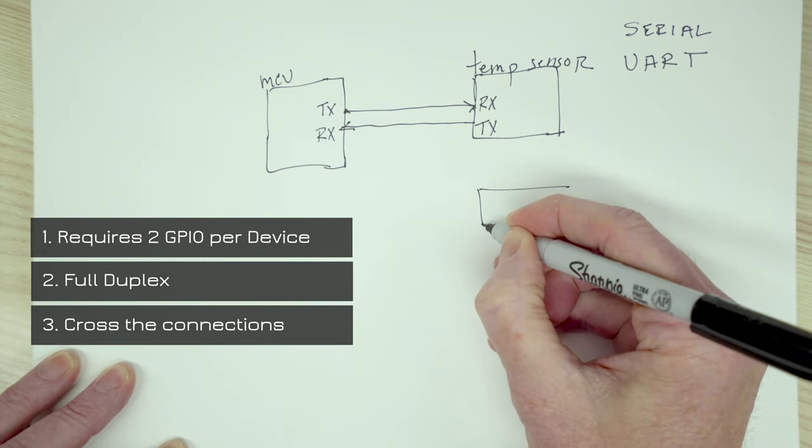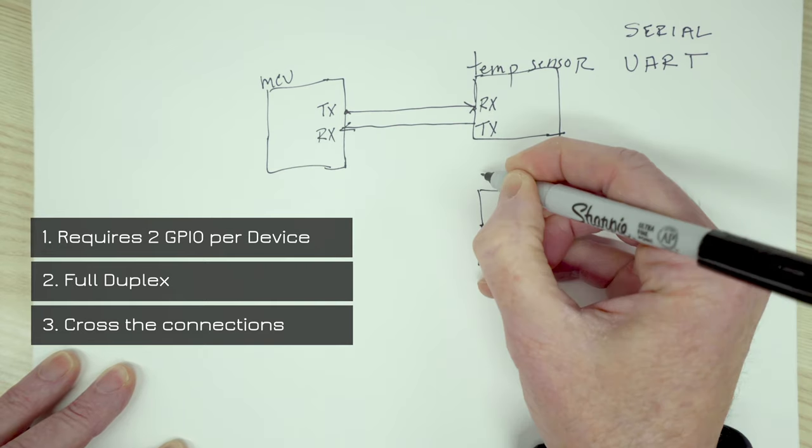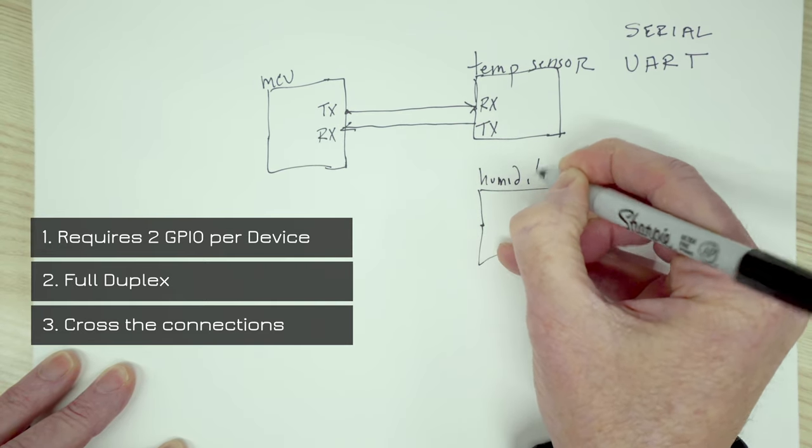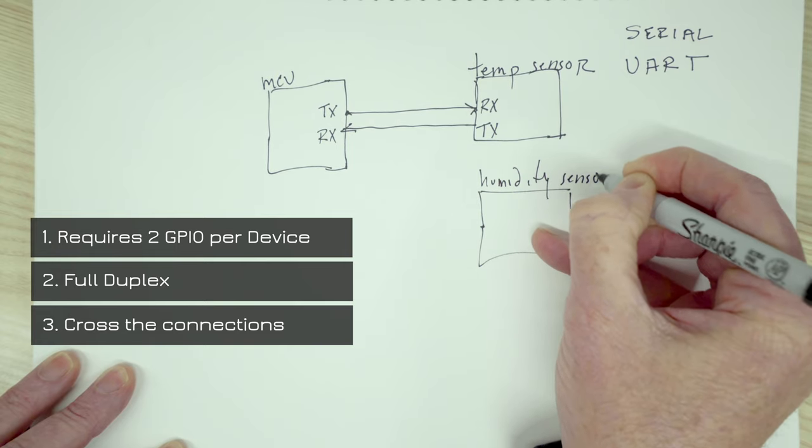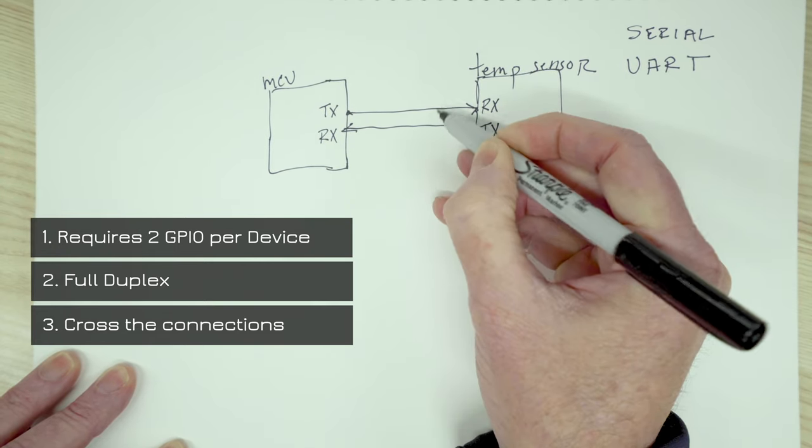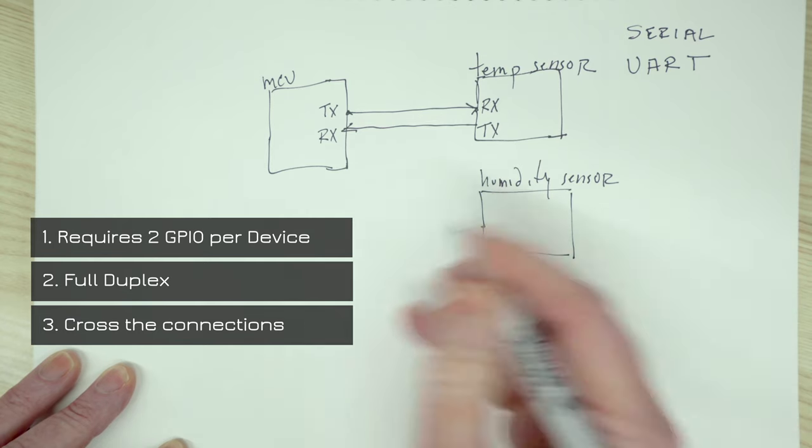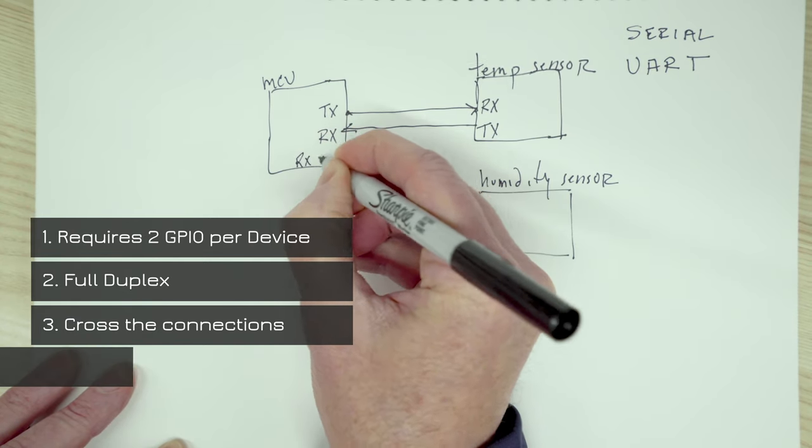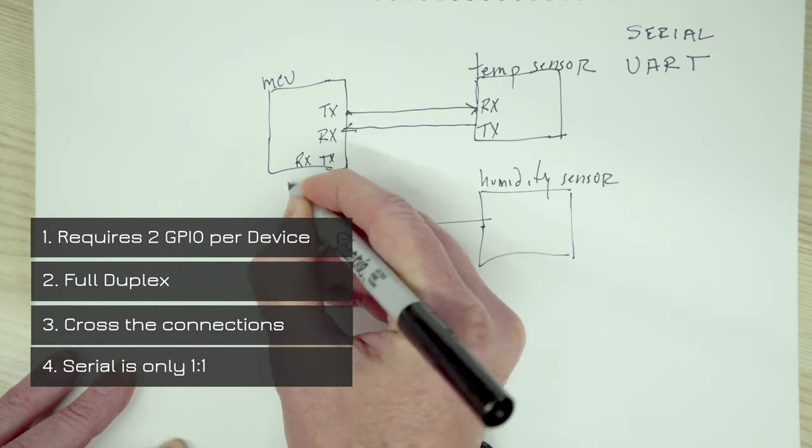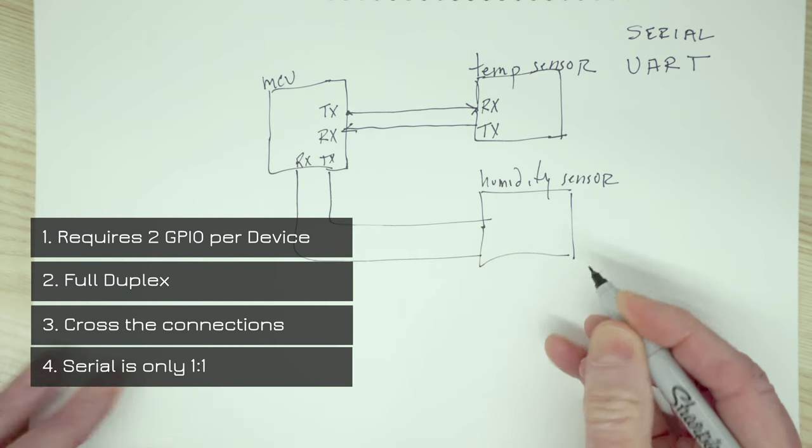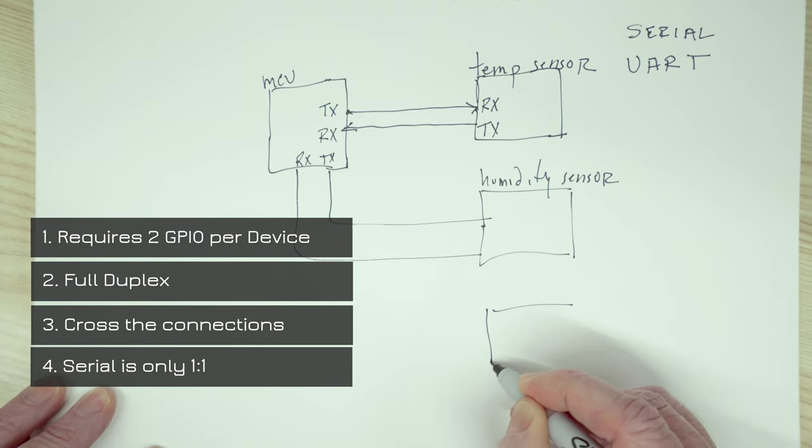Now, another thing to consider when we do this is if we wanted to add a humidity sensor, which was also basically a serial communication, we cannot tie off these lines like we would with I2C and SPI. We actually have to use two new lines on the microcontroller. So the thing to keep in mind is as we continue to add devices that are serial,